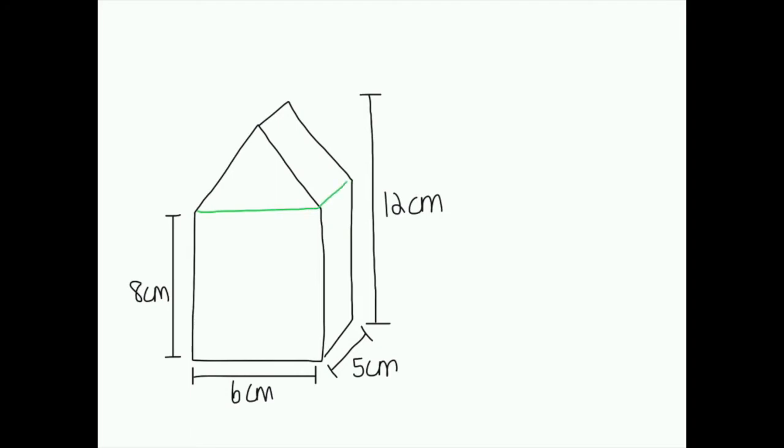I can see a rectangular prism, which I'll shade here in blue, and I can also see a triangular prism up the top, which is shaded in purple. If I draw this out, I have my rectangular prism and I have my triangular prism.